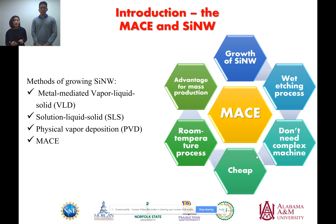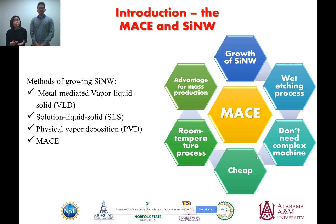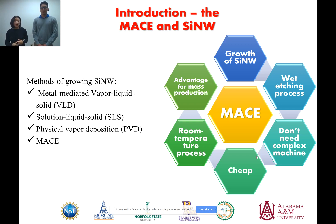Silicon nanowires can be grown using different methods such as metal-mediated vapor-liquid-solid, solution-liquid-solid, or physical vapor deposition, or using MACE. We are focusing on using MACE to grow silicon nanowires because this is a wet etching process which does not require any complicated machines. We can perform this process at room temperature, which is a great advantage for mass production due to its low cost.